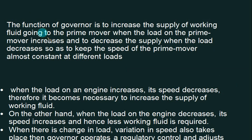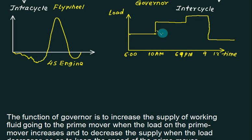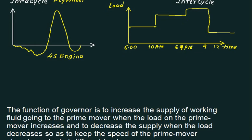To summarize: the function of the governor is to increase the supply of working fluid going to the prime mover when the load increases, and to decrease the supply when the load decreases, so as to keep the speed of the prime mover almost constant at different loads. If the load is low, it supplies less fuel; when the load increases, it slightly increases fuel supply; and when the load is very high, it increases the quantity of fuel or steam supplied in a thermal power plant. Thereby you can control the power development.